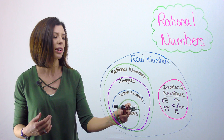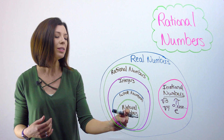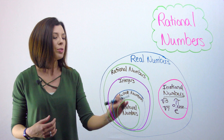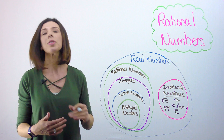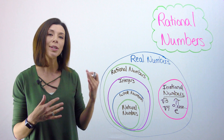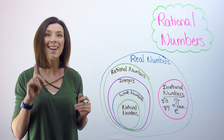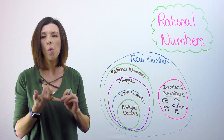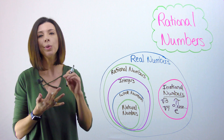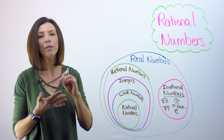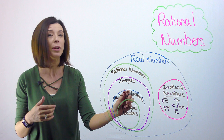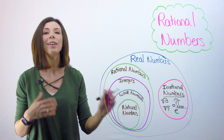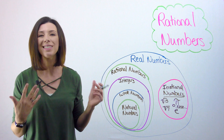It's easiest to start in the very middle and work our way out. Natural numbers are all of our normal counting numbers, but not 0. Think of 1, 2, 3, 4 — they have to be whole numbers, but they do not include 0.